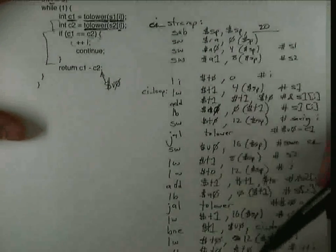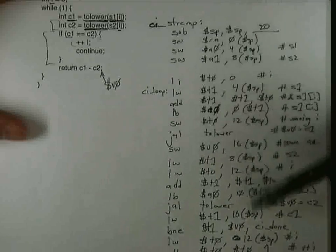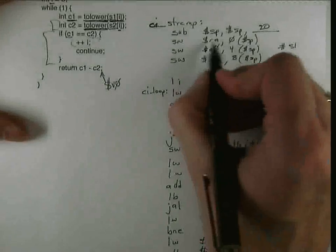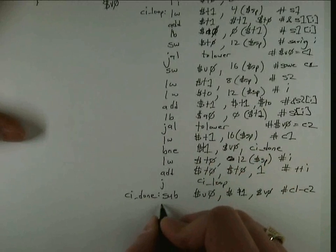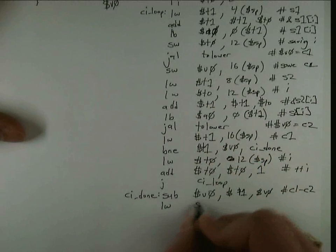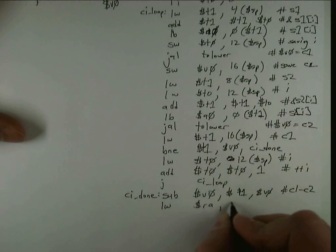Most of these things I don't need to load back in. The one in particular that I do need to load back in is RA, because I need that before I can do the return statement. So I'm going to load that back using, again, exactly the opposite of what I used to save it.